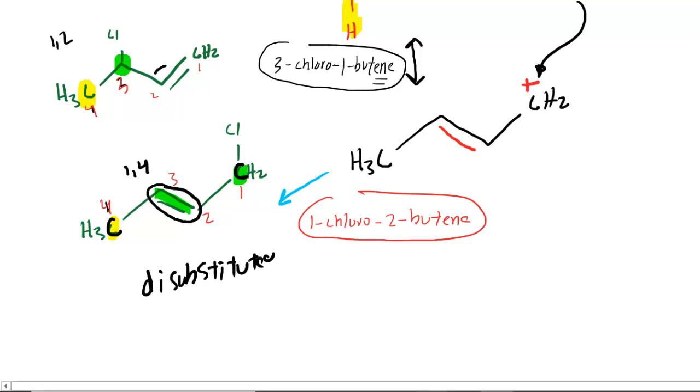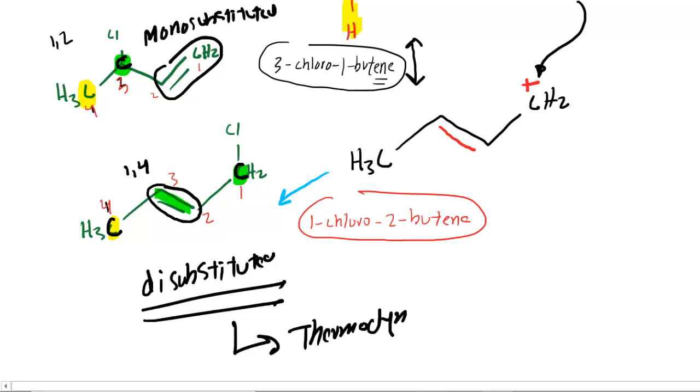Look at the other alkene with the 1,2 product. Put a little bubble around that double bond, and then ask yourself how many carbons are directly bonded to that bubble. And you can see that only this carbon is directly connected to that bubble. So that would be a mono-substituted alkene. And it turns out that a di-substituted is more stable. So we call this the thermodynamic product, because the thermodynamic product is a term applicable to the more stable of the two products. So that, in a nutshell, is what makes the 1,4 product the thermodynamic product.